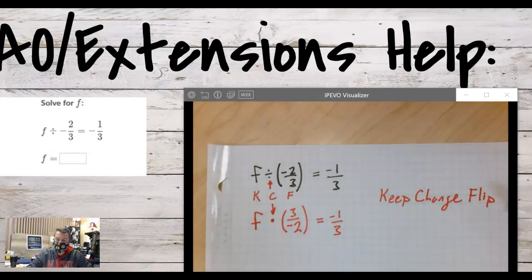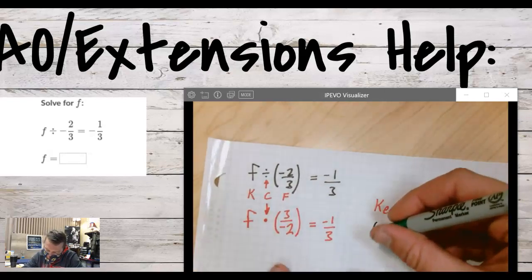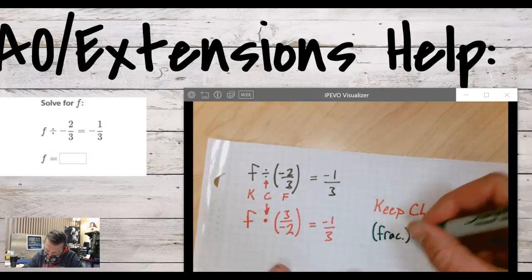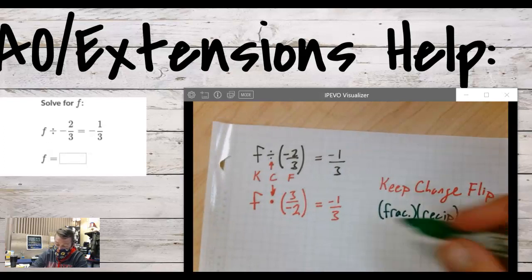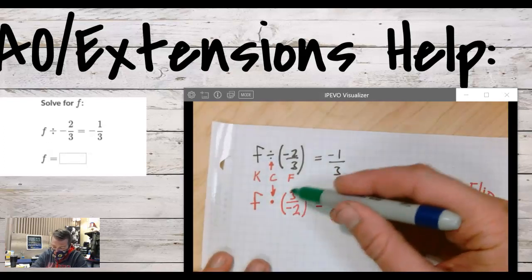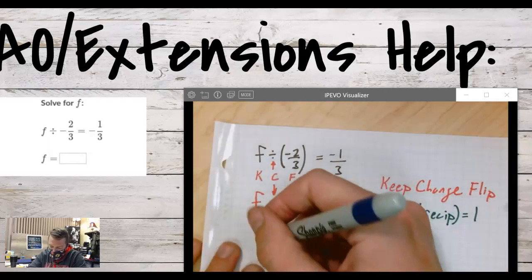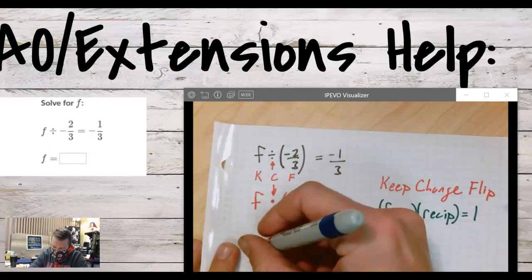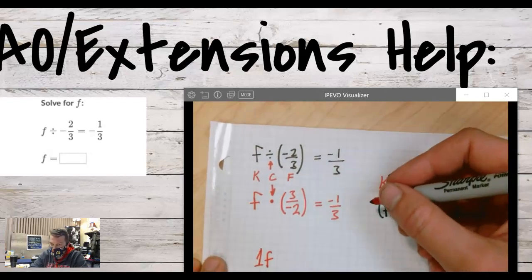Now is where we are allowed to use reciprocals to equal out to one. A fraction times its reciprocal is one. So if we take this fraction and multiply it by its reciprocal, our goal - and this was always our goal, but I messed it up last time when we tried to solve - our goal is to get to one f.